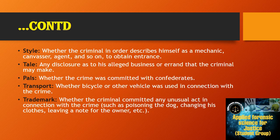Style: whether the criminal describes himself as a mechanic, canvasser, agent, and so on to obtain entrance. Tale: any disclosure as to his business or errand that the criminal may make. False: whether the crime was committed with confidence. Transport: whether a bicycle or any other vehicle was used in connection with the crime. Trademark: whether the criminal committed any unusual act in connection with the crime, such as poisoning the dog, changing his clothes, or leaving a note for the owner. These are the components to keep in mind during investigations.